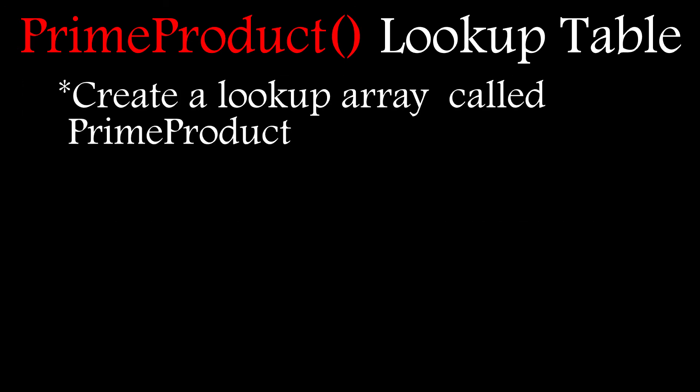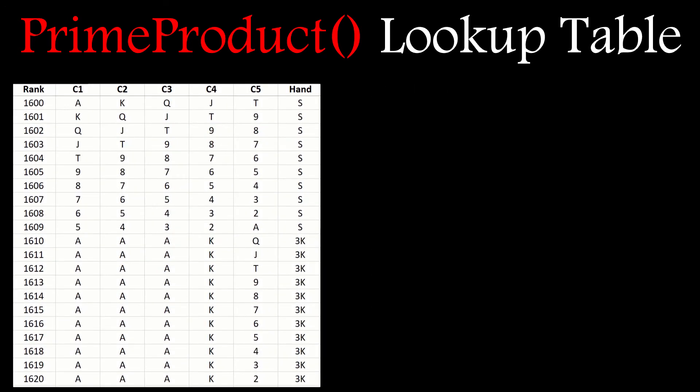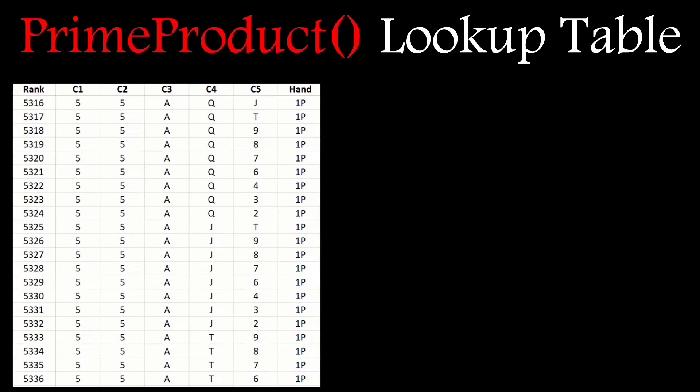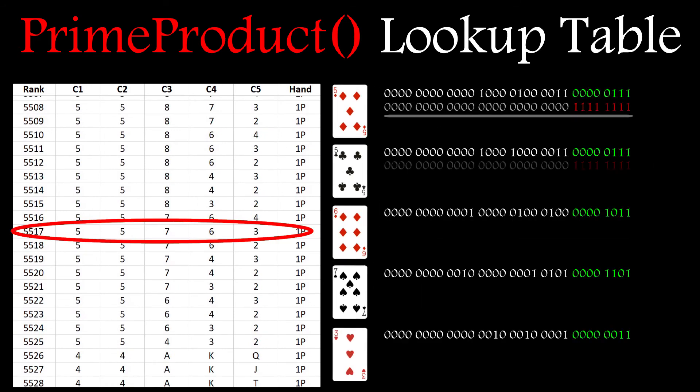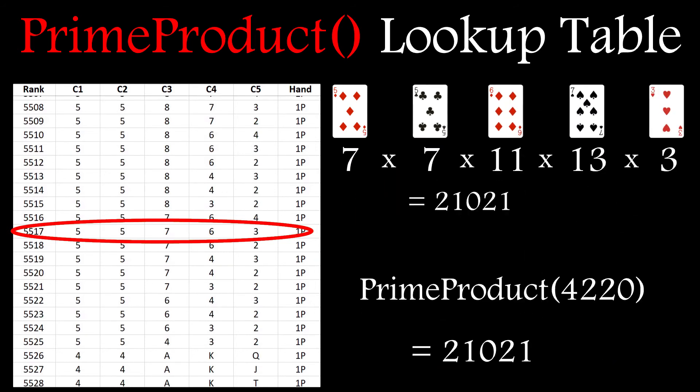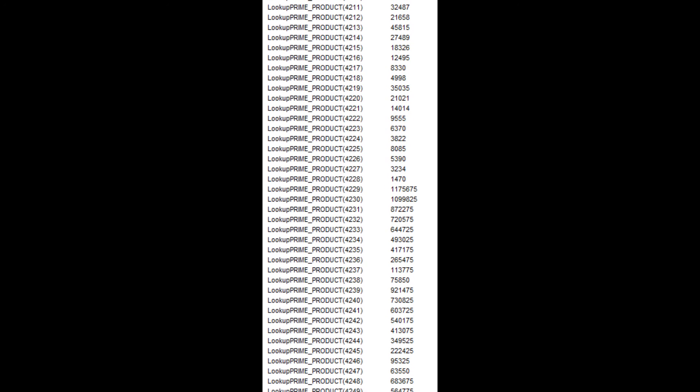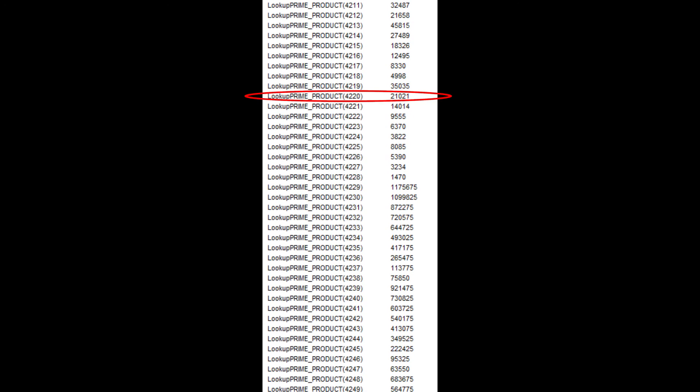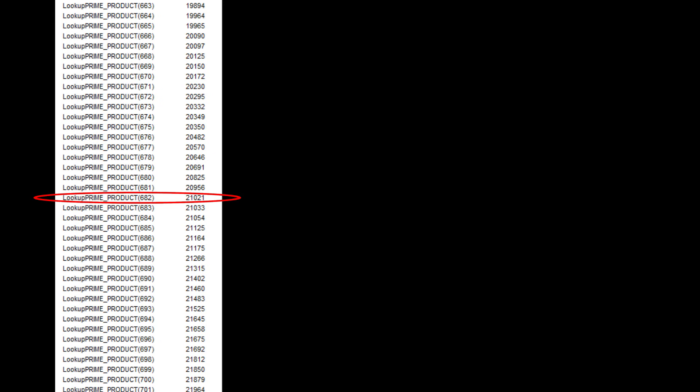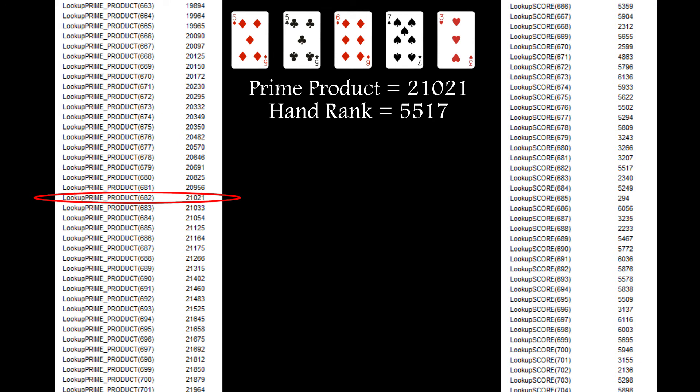So he created an array with 4888 rows and populated it with the prime product of all the remaining hands. And he did this by applying an appropriate mask to extract the prime number from each card. In the example hand shown, the prime product gets inserted into row 4220. The array is then sorted in ascending order, which moves our example to row 682. He kept a track of the hand rank and used the row number from the prime product array as an index into his final table, which stores the hand rank.